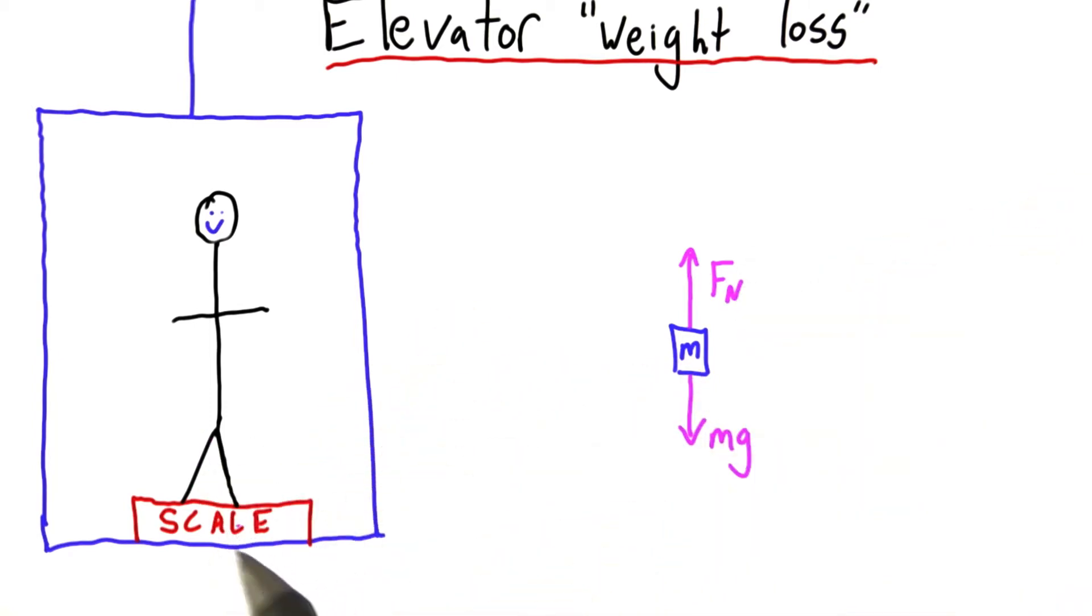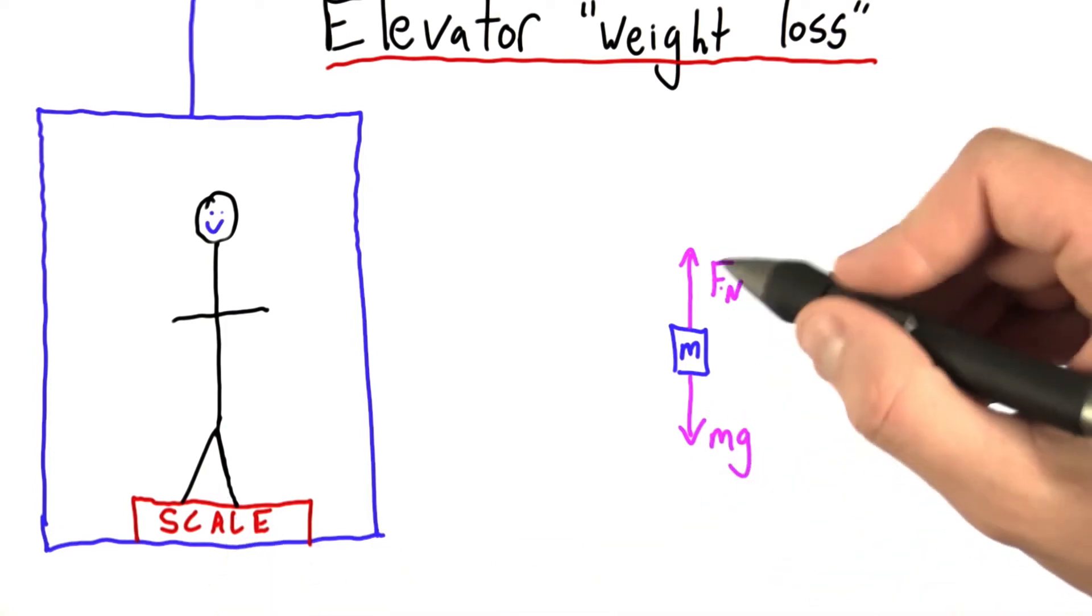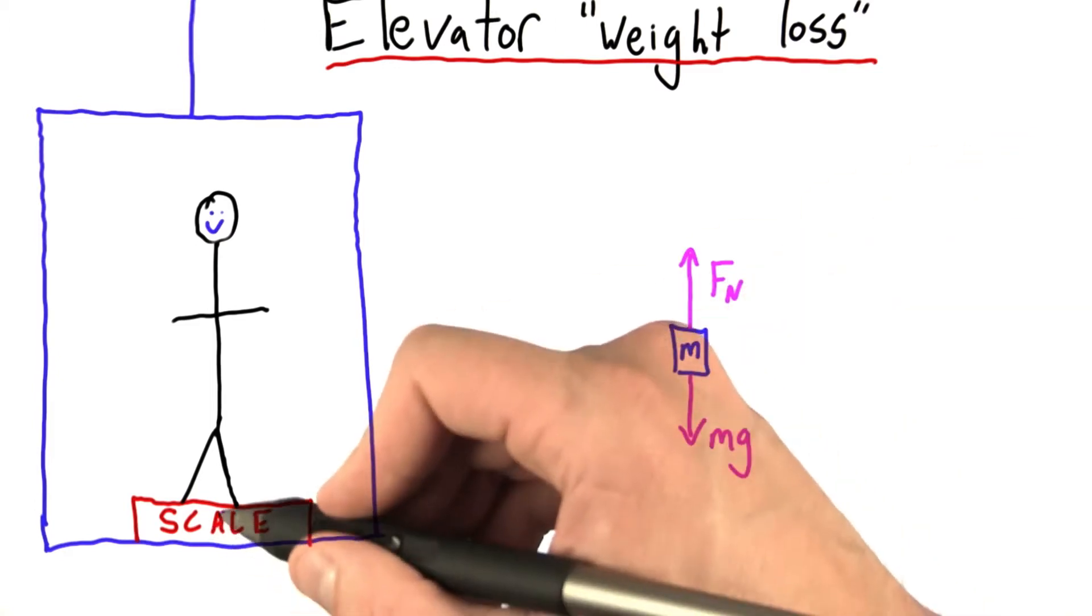Now remember, the scale doesn't read mg. It doesn't tell you exactly what your weight is. It tells you how hard it has to push to keep you from falling through the scale.